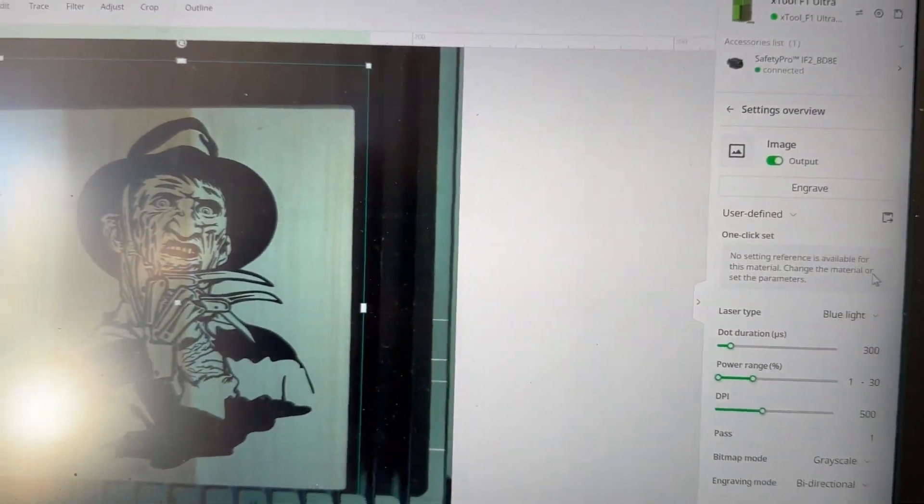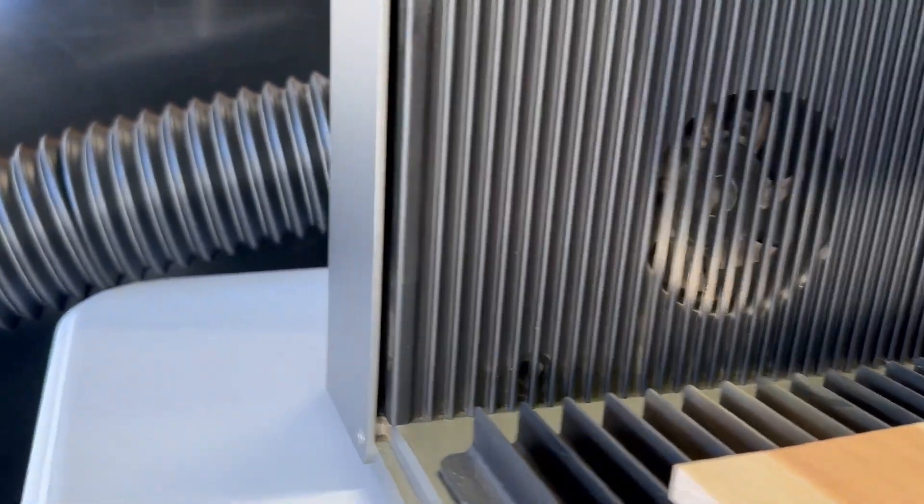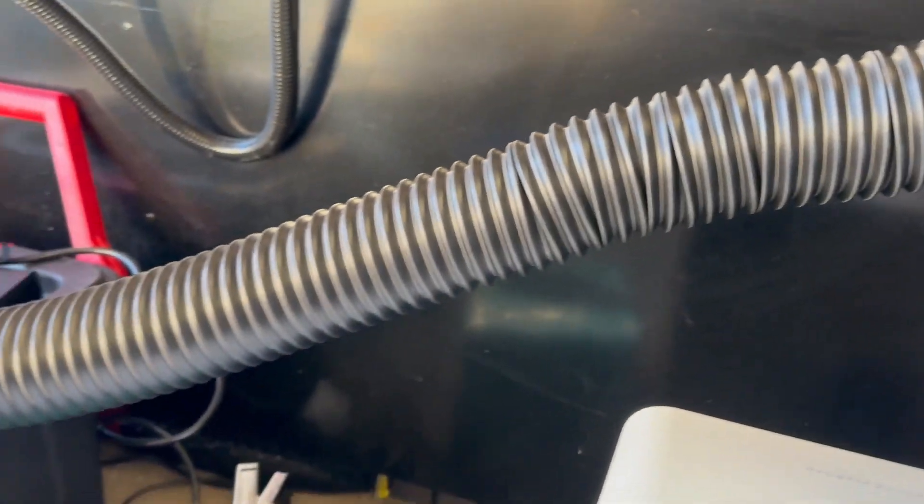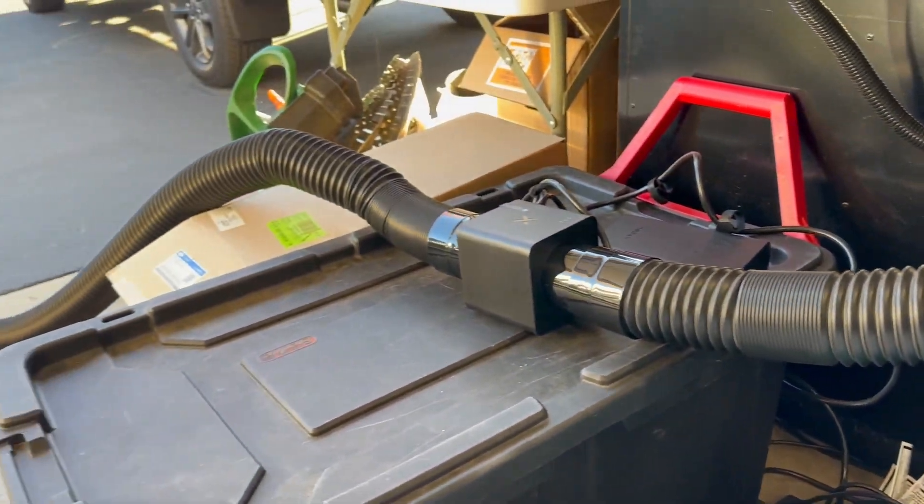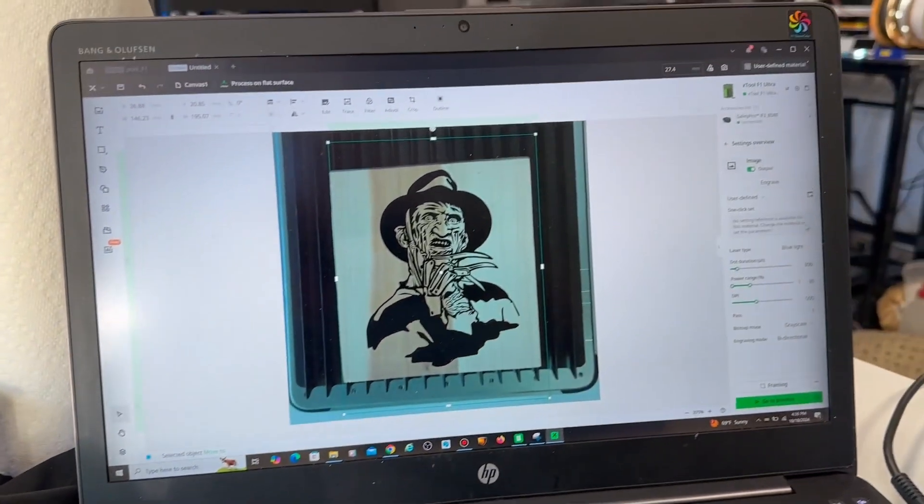Next, we're going to take a look at the IF-2, the inline fan. And this is a very powerful fan. And it's hooked up the same way with the hose, the Bluetooth module, and I'm going to have it on auto. And it's going to be connected to the F1 Ultra. So it's going to automatically do the settings for me. And we're going to do basically the same test.